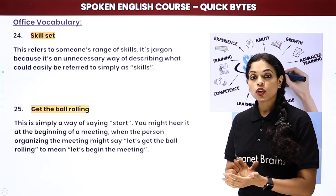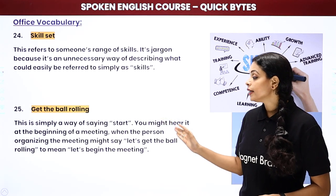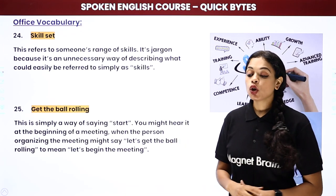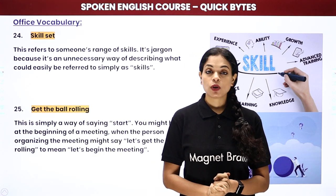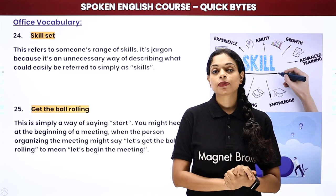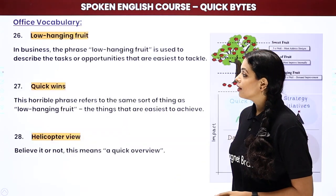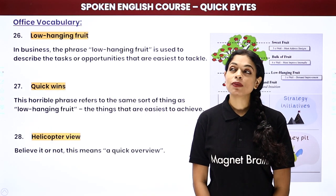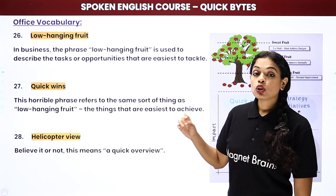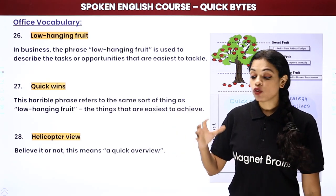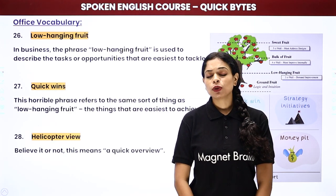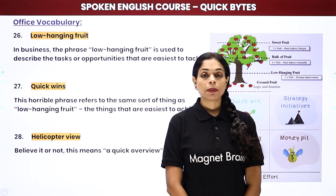Then, get the ball rolling. Get the ball rolling means to start something. You might hear this at the beginning of a meeting when the organizer says 'Let's get the ball rolling' — meaning let's start the meeting. Then, low hanging fruit. Low hanging fruit refers to a fruit you can easily reach — so it means something very easy. Tasks or opportunities that you can easily tackle or grab are called low hanging fruit. For example, 'That promotion was a low hanging fruit for him — the boss already knew him so well.'